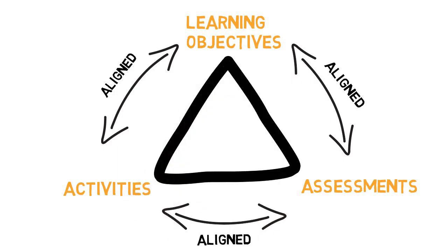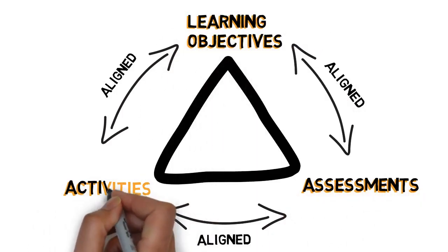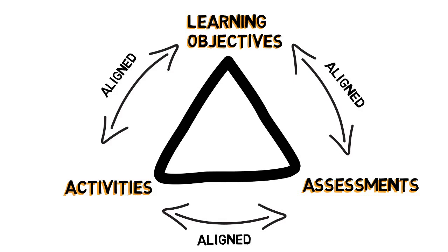So, in summary, constructive alignment consists of three elements: the learning objectives, the assessments, and the learning and teaching activities. For a sound and valid design, all three elements need to be aligned.